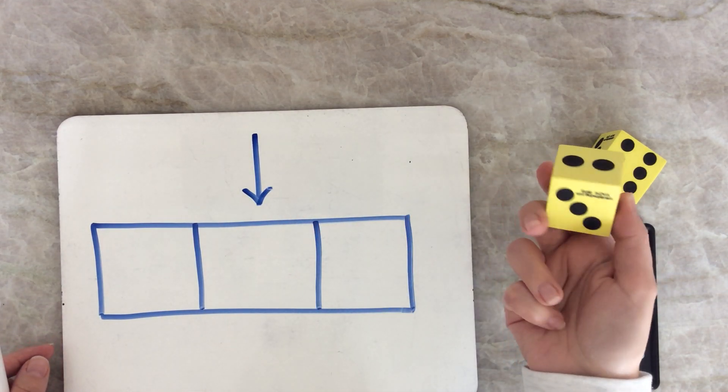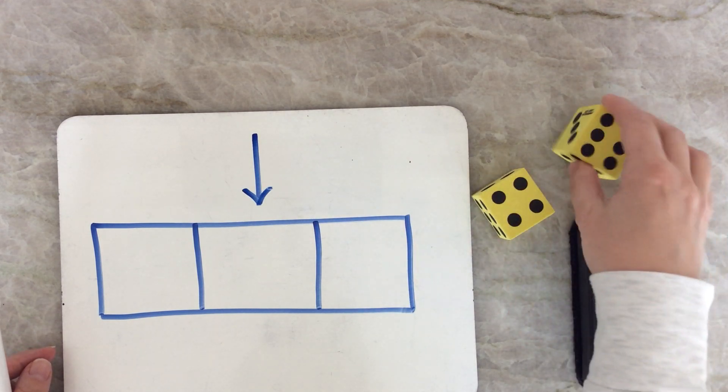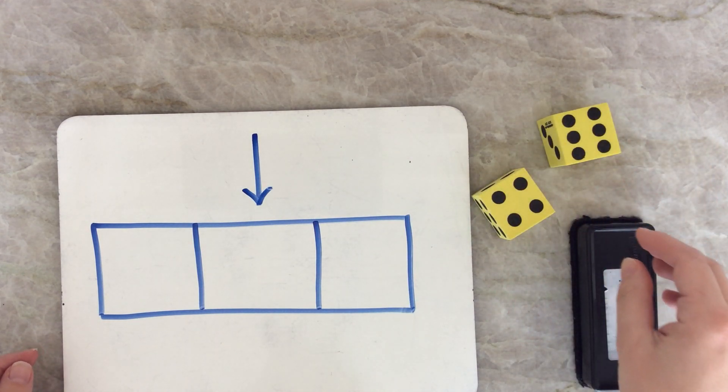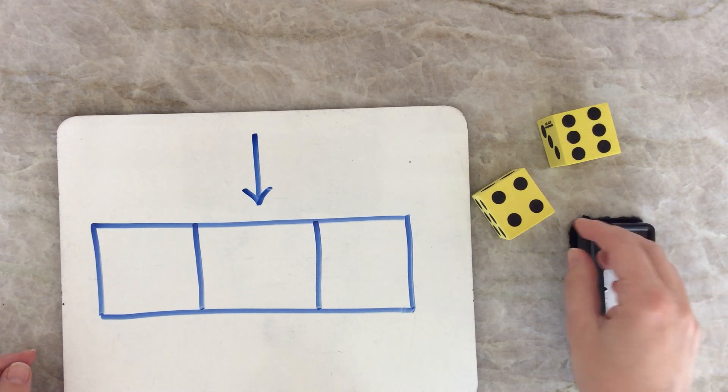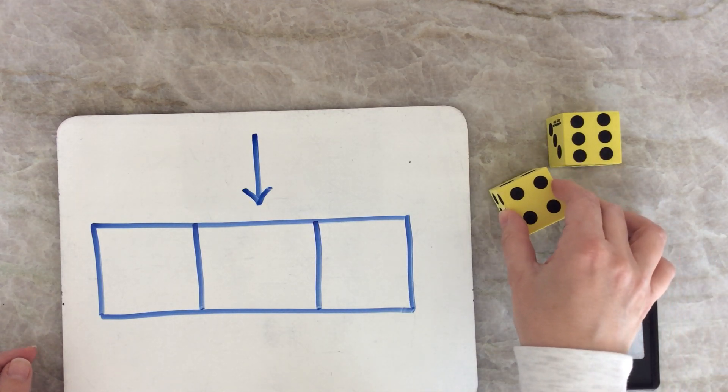You're also going to need some dice. You can play with one, or you can play with two, or you can even play with more if you'd like. It becomes very challenging if you use more than two dice. So here's how you play.